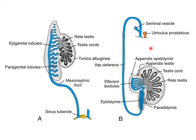The prostatic utricle, or utriculus prostaticus, is an outpocketing from the urethra which later forms the prostate.